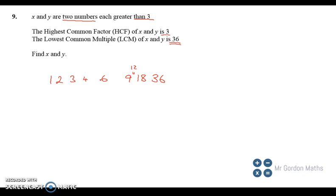Well, 6 and 12 won't work because their highest common factor would be 6. 6 goes into 12, so that's not going to be any good.